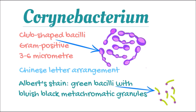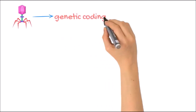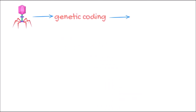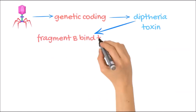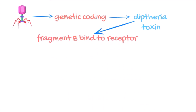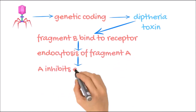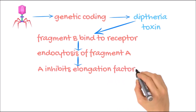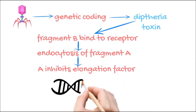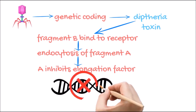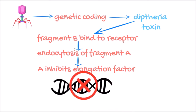Now we will discuss about diphtheria toxin, which is coded by a bacteriophage that manipulates Corynebacterium's genetic material and causes the formation of diphtheria toxin, which has two fragments. Fragment B binds to the receptor and causes endocytosis of fragment A. Fragment A is the active fragment which inhibits elongation factor II, causing inhibition of translation, necrosis, death of the cell, and inflammation.